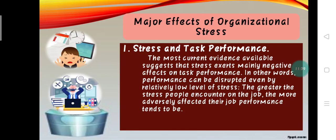Now let us discuss the major effects of organizational stress. By now, you are probably convinced that stress stems from many sources and that it exerts very detrimental effects on the people who experience it. One of the major effects of organizational stress is the impact on task performance. The most current evidence suggests that stress exerts mainly negative effects on task performance. In other words, performance can be disrupted even by relatively low levels of stress. The greater the stress people encounter on the job, the more adversely affected their job performance tends to be.